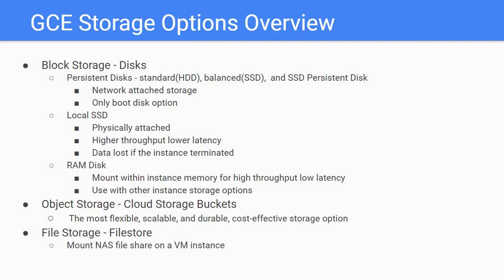With disk options, you can mount a RAM disk within the instance memory to create a block storage volume with higher throughput and low latency. RAM disks work well when your application expects a file system structure and cannot simply store its data in memory. RAM disks alone do not provide any storage redundancy or flexibility, so it is best to use RAM disks in combination with other instance storage options.